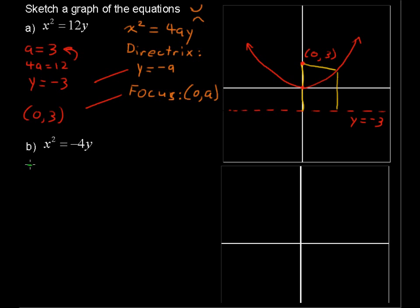When A, let's see, 4A equals negative 4, that's what's being multiplied by Y, so A equals negative 1. So our directrix is Y equals the opposite of negative 1. Remember, Y equals negative A, so Y equals 1 is our directrix. So I'll put that in there. It's going to be a lot closer to the X-axis than our previous example, Y equals 1. And our focus is at 0A, or 0, negative 1. So I'll put that right there.